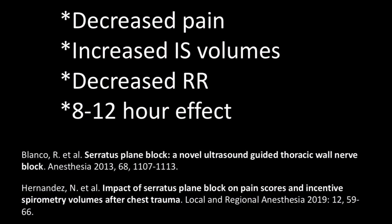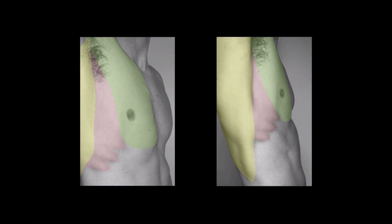When utilized with a long-acting local anesthetic, pain control tends to last 8 to 12 hours. When performing a serratus block, the cutaneous branches of nerves T2 through T9 are targeted. Before reviewing ultrasound anatomy, a review of surface anatomy is important.